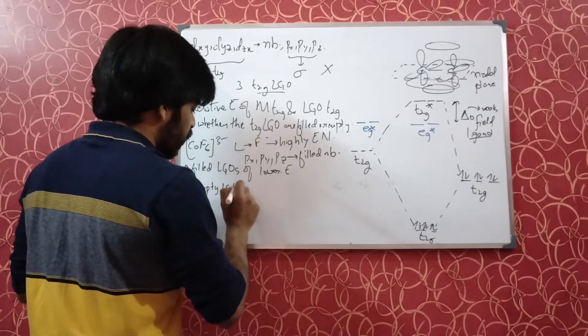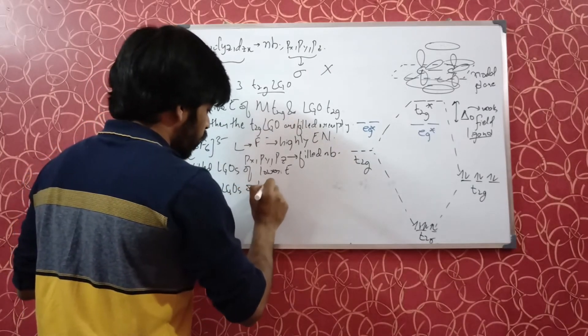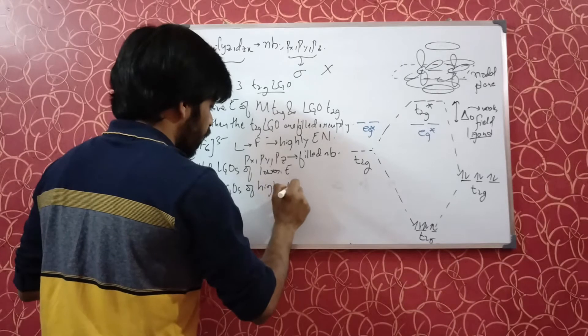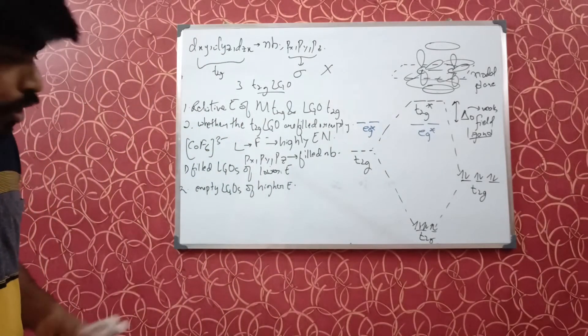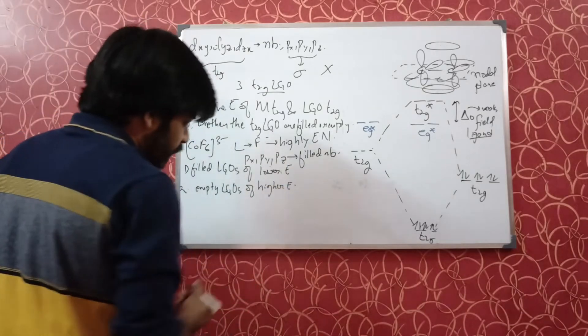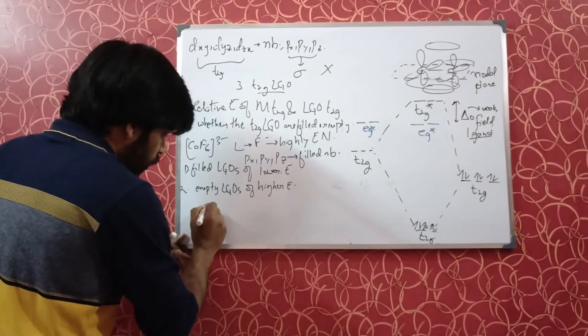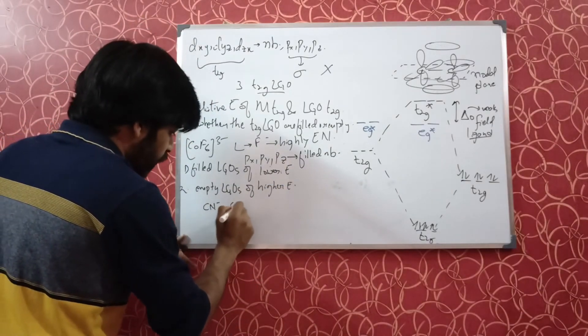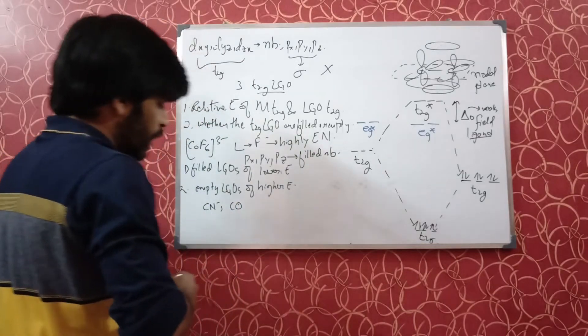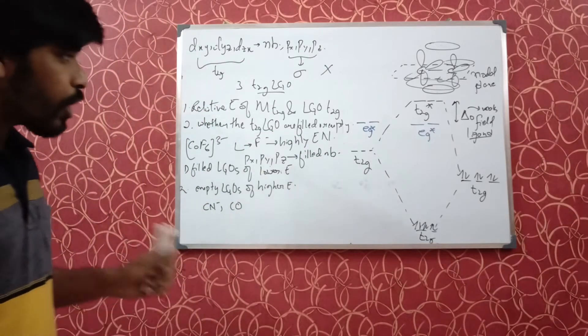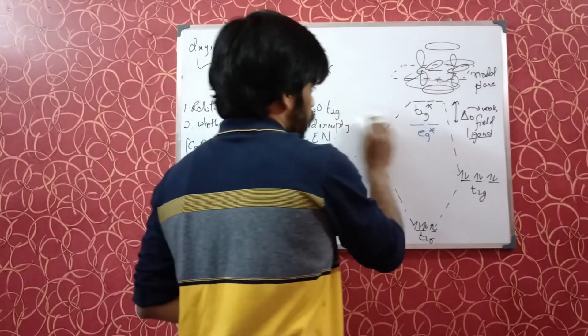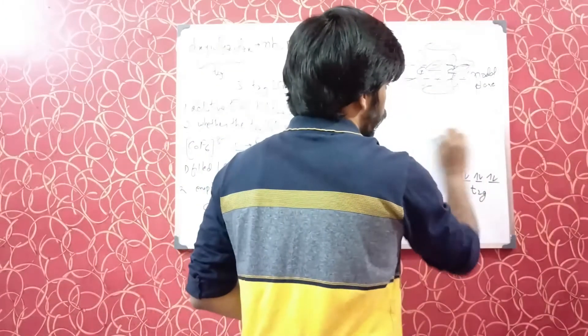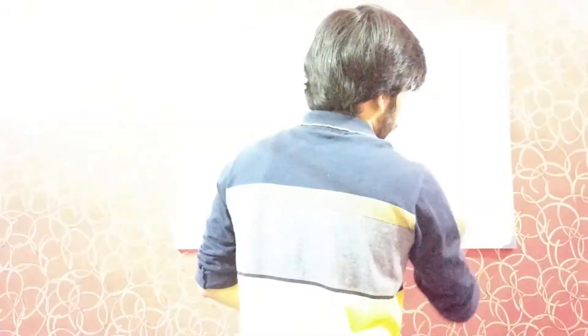The second case is empty ligand group orbitals of higher energy. In this case, what will be one example of that kind of complex? Let's say you have ligands like CN- or CO which have empty pi star orbitals which can take part in pi bond formation. Now, how is that going to affect the splitting?